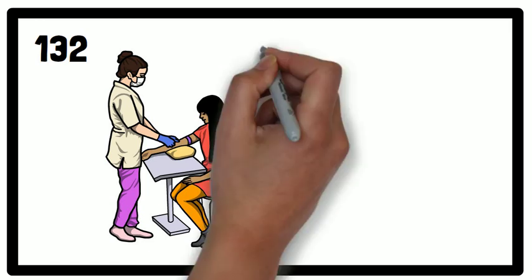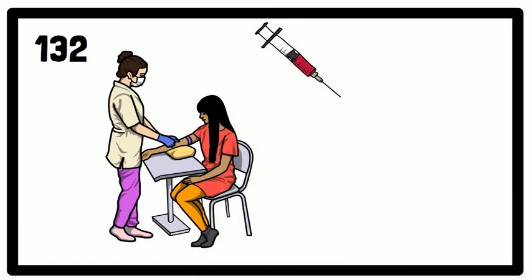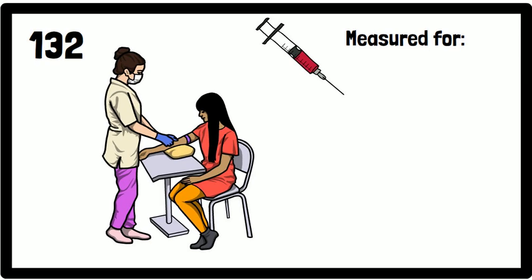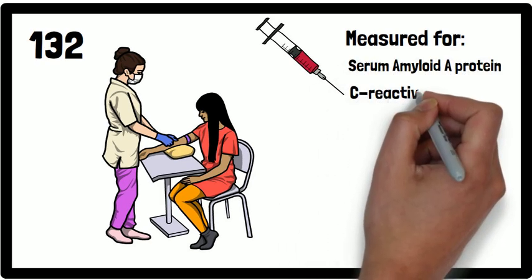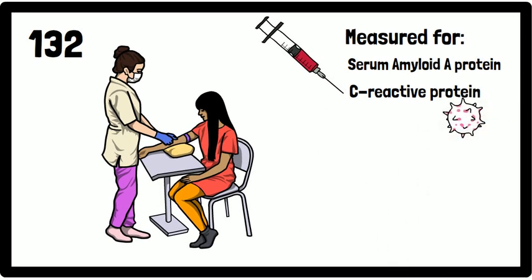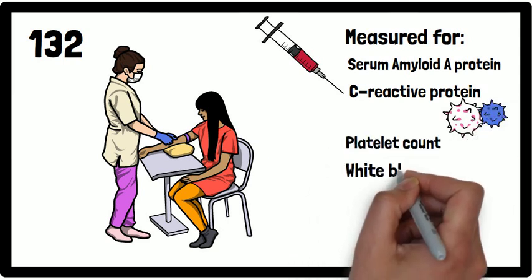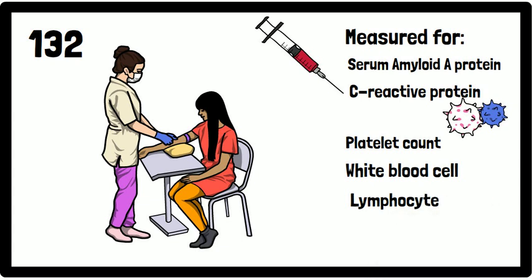They conducted a blood test on these patients to measure their blood for levels of serum amyloid A protein, C-reactive protein, which is involved in the inflammation response, platelet count, white blood cell count, and lymphocyte.